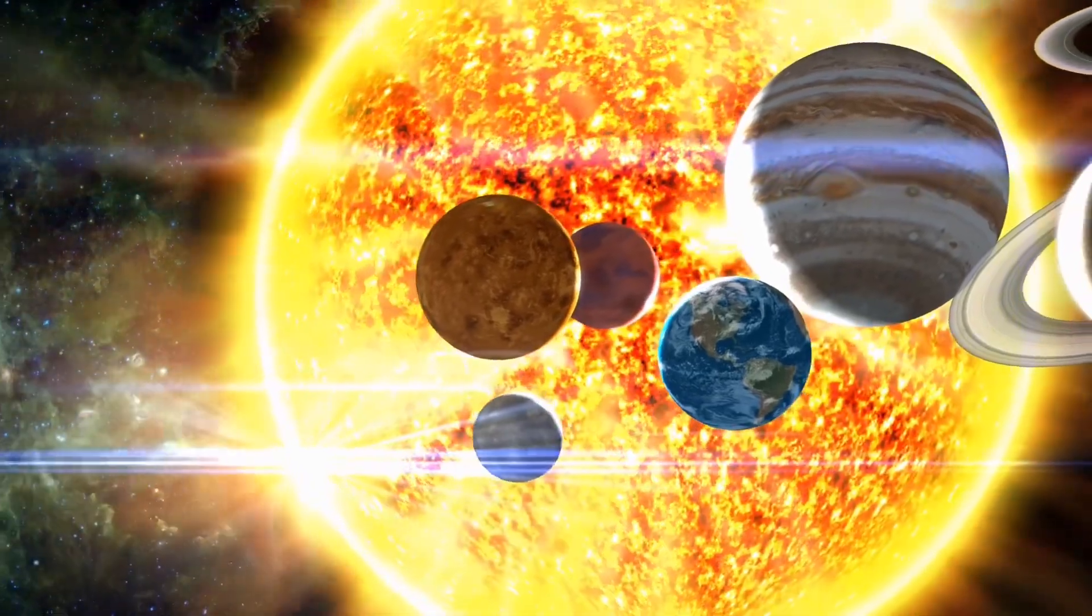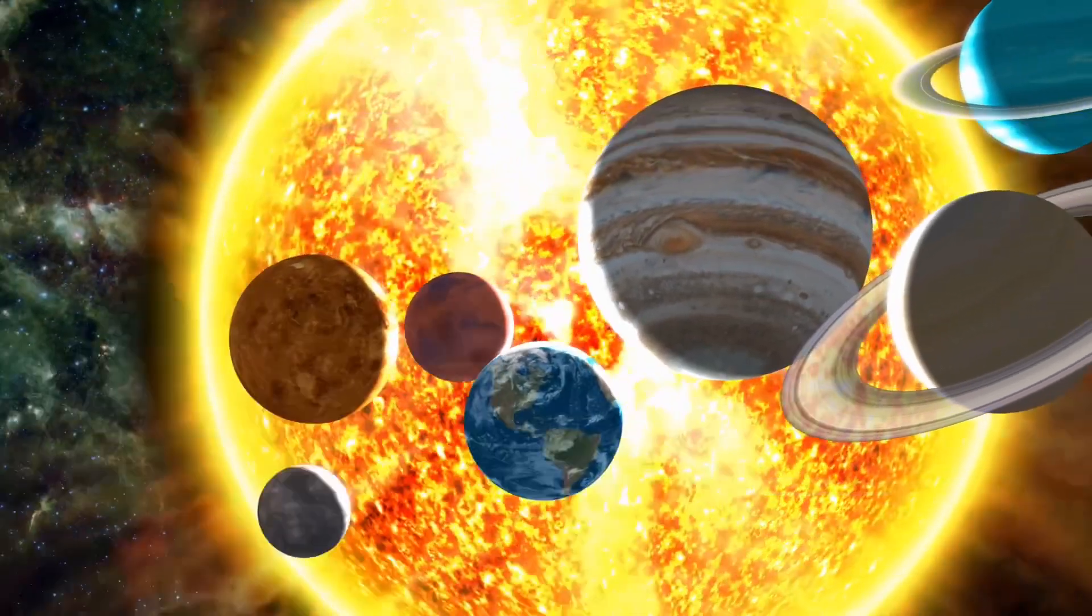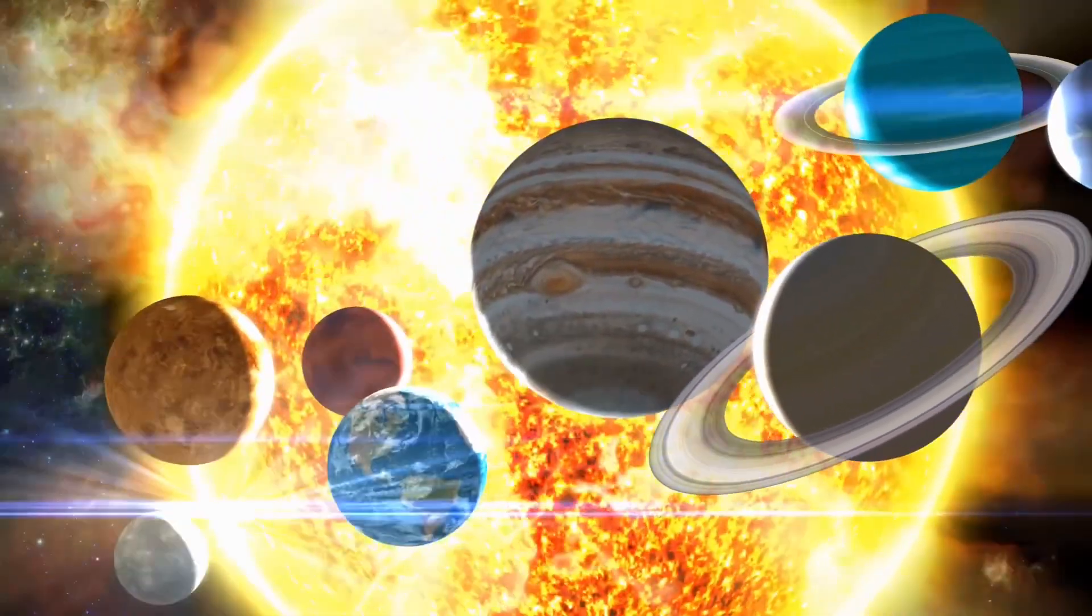Planetary orbits around the sun. Imagine the sun is a big, bright ball in the centre of the solar system.